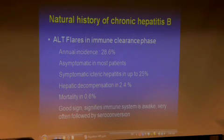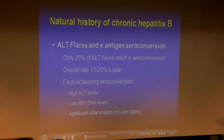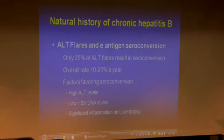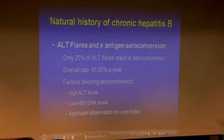In this phase, if the liver function is very bad, the patient can decompensate, but mortality is very low. The purpose of this phase is to convert the e-antigen to e-antibody, because e-antibody generally means there's less virus in the blood. Unfortunately, only about 25% of all flares result in e-antibody conversion — that's one in four — at an overall rate of 10 to 20% per year. Most other patients will subside by themselves, then flare again after a few years, resulting in multiple flares, which is generally not good for them.